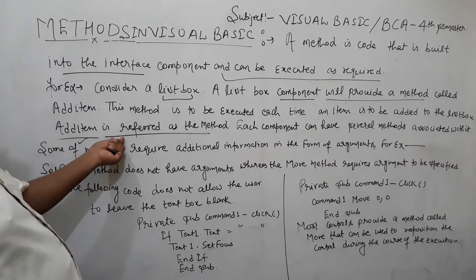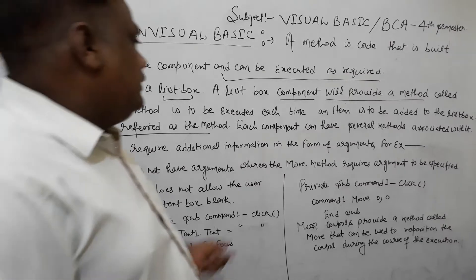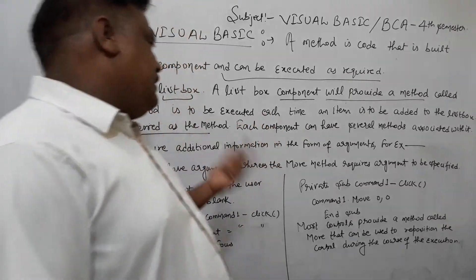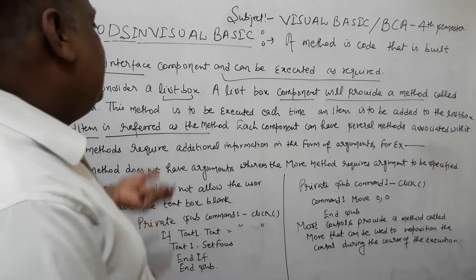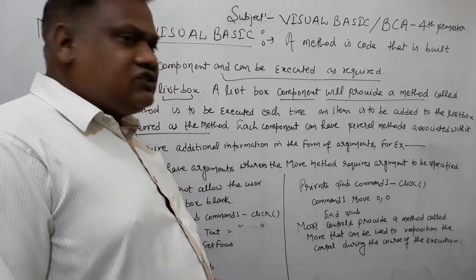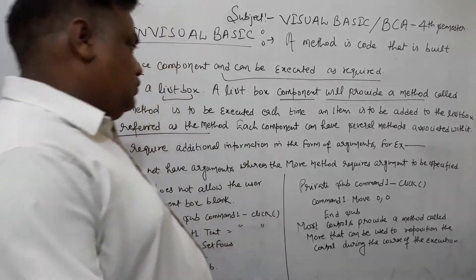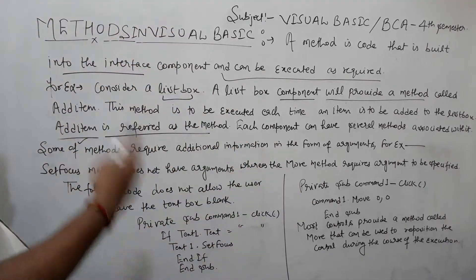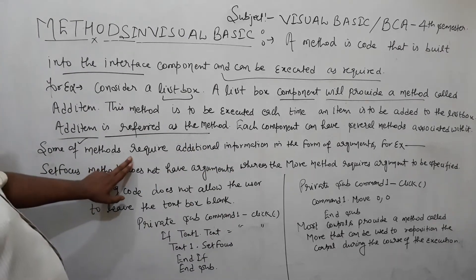AddItem is referred to as the method. This method is to be executed each time an item is to be added to the ListBox. Each component can have several methods. Every component can have several methods which are executed — combo box, controls, toolbox, text — all of these have methods.